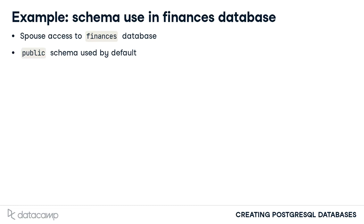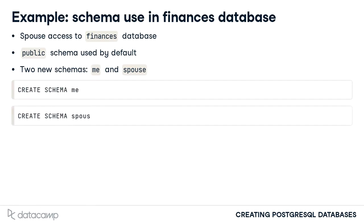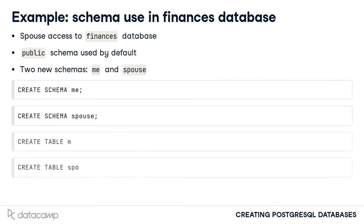You decide to manage the individual accounts in two separate schemas. One will be named the me schema and the other will be named the spouse schema. After creating these schemas using the familiar command seen here as the database super user, you add the account table and all other tables that existed under the public schema to these new schemas.